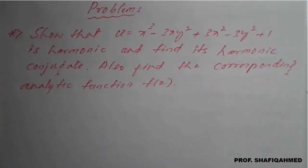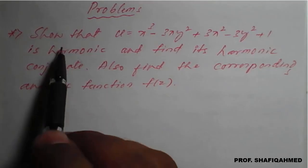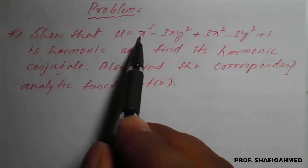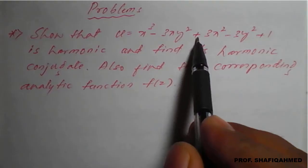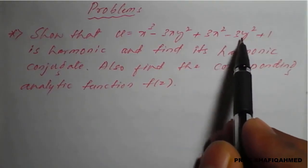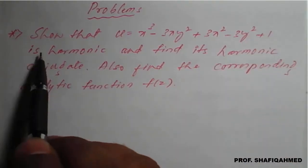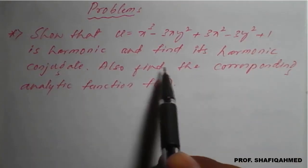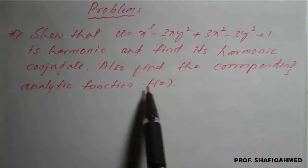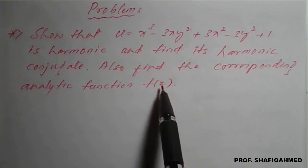Hello everyone. In this lecture we will see a problem on harmonic conjugate and analytic function. The problem is: show that u = x³ - 3xy² + 3x² - 3y² + 1 is harmonic, find its harmonic conjugate, and also find the corresponding analytic function f(z).